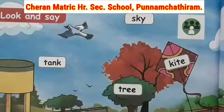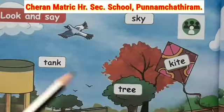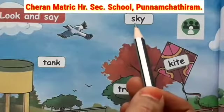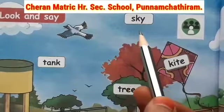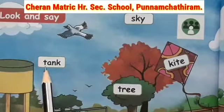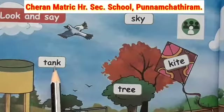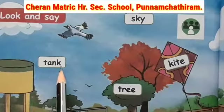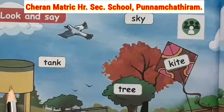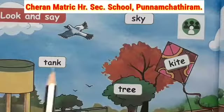Look and say. S-K-Y — sky. Sky means vaham. Next, T-A-N-K — tank. Tank means thutti. Water tank means thunny thutti. Tank means thutti.